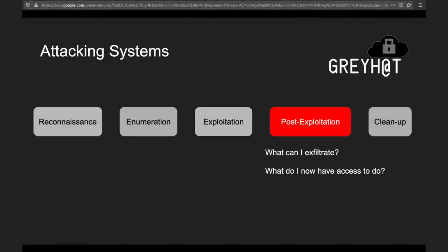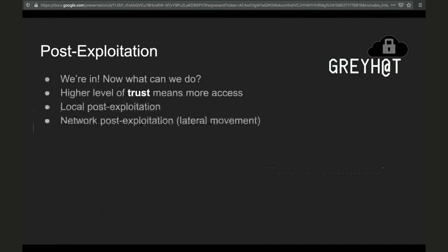Sometimes we'll have more trust from the network and we'll also be able to go straight up exfiltrate some data. So we've got in and now we're able to start our post-exploitation. The big theme we're going to be talking about is trust. When we have a higher level of trust from the network and network administrators — whether intentionally or unintentionally because some security control wasn't thought of — it means we have an elevated amount of access.